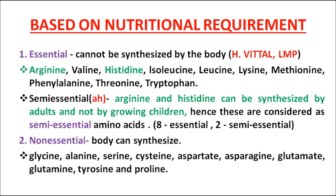Based on nutritional requirement, we can classify amino acids into essential, semi-essential, and non-essential amino acids. Essential amino acids are the ones which cannot be synthesized by the body itself. There is a short mnemonic to remember these: H VITAL LMP. H stands for histidine, V for valine, I for isoleucine, two T's for threonine and tryptophan, A for arginine, L for lysine, M for methionine, and P for phenylalanine — giving 10 essential amino acids.